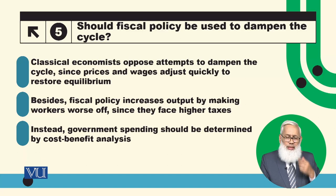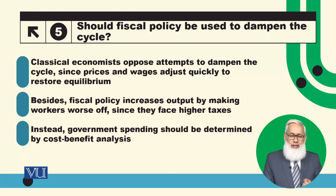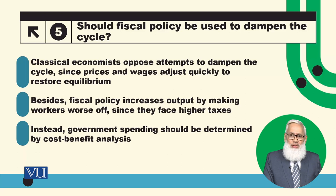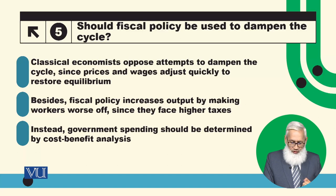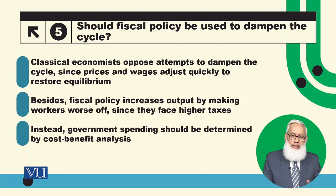Government spending decisions should not be based on whether the economy is in a recession or a boom, because according to the classical model the economy is always in general equilibrium. If an attempt is made to boost the economy during a recession through government spending, the classical economists argue that workers will work more and output will increase, but workers will feel poorer. So the government spending decision should be based on cost-benefit analysis: if a project's benefit exceeds its cost, it should be done; otherwise, it should not.